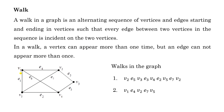For example, if you start with v1 then you can choose a sequence like v1, e4, v2, e5, v3 — so this is a walk. Every edge between two vertices in the sequence must be incident on those two vertices. You cannot write v1, e6, v2 because e6 is not incident on v2. In a walk, a vertex can appear more than once, but an edge cannot appear more than once.